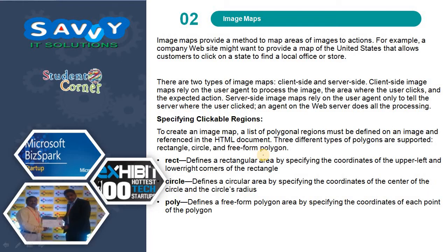Image maps provide a method to map areas of images to actions. For example, a company website might want to provide a map of the United States that allows customers to click on a state to find a local office or store. There are two types of image maps: client-side and server-side. Client-side image maps rely on the user agent to process the image area where the user clicks and the expected action. Server-side image maps rely on the user agent only to tell the server where the user clicked, and an agent on the web server does all the processing.